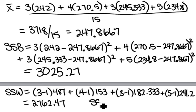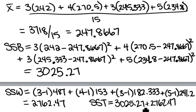So then the last thing we get is our sums of squares total, where we can just add our between and our within. So if you add 3025.27 and 2762.47, we get an SS total equal to 5787.74.